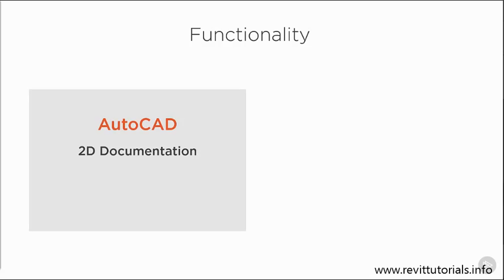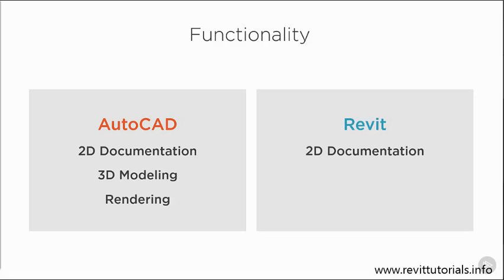We're going to focus on functionality here. With AutoCAD, we know it's one of the best 2D documentation tools out there — we've been using it for years in our industry. We also have the ability to create 3D models, and we can create pretty nice renderings of those 3D models. Similarly, we have the ability to do 2D documentation in Revit as well, and with BIM, we can create 3D models and really nice rendered images of those projects.